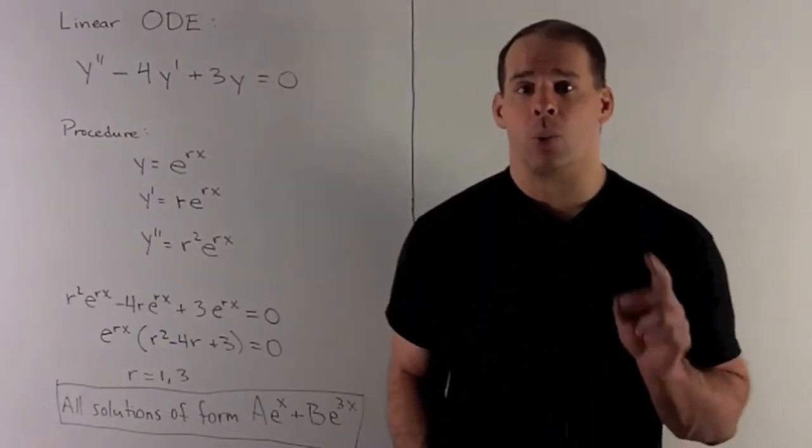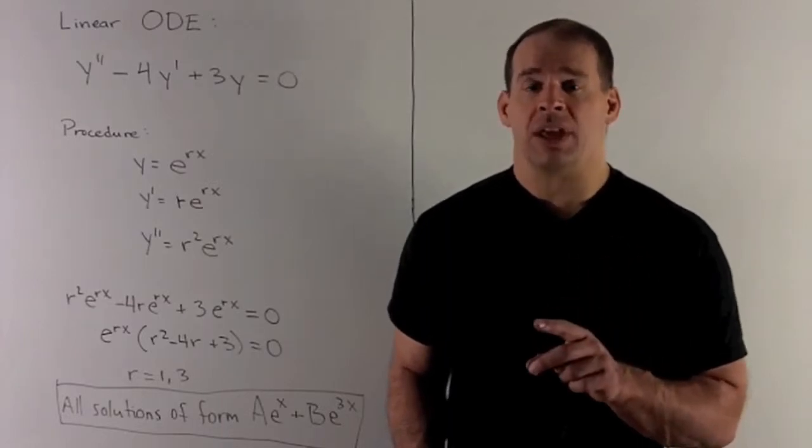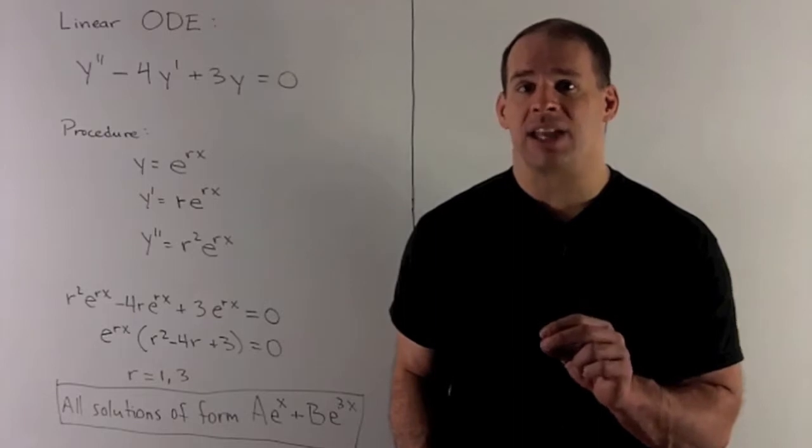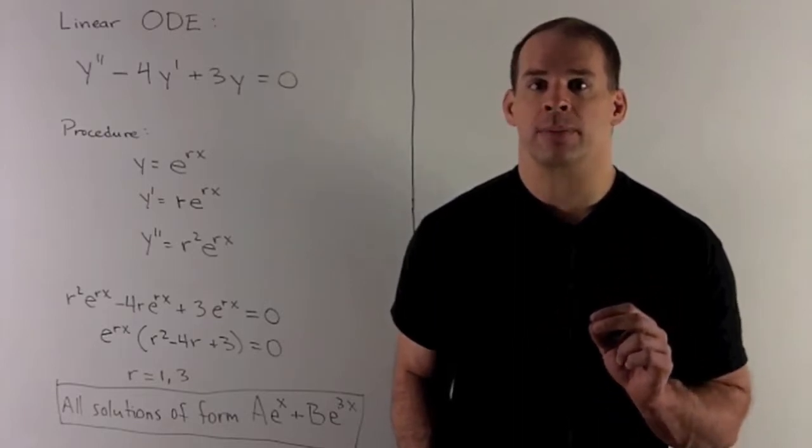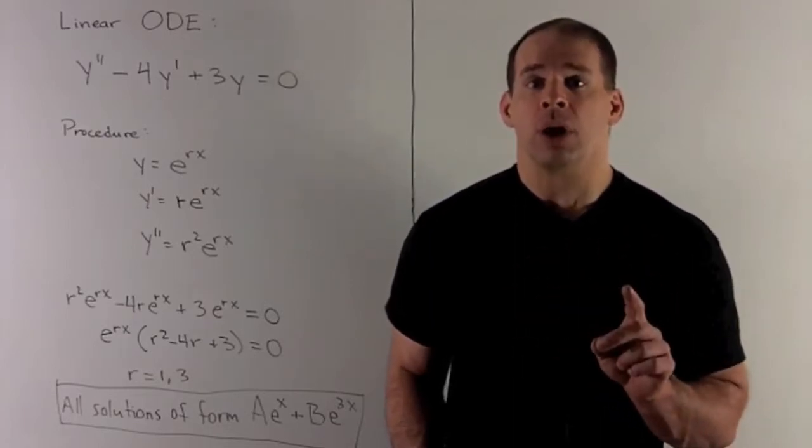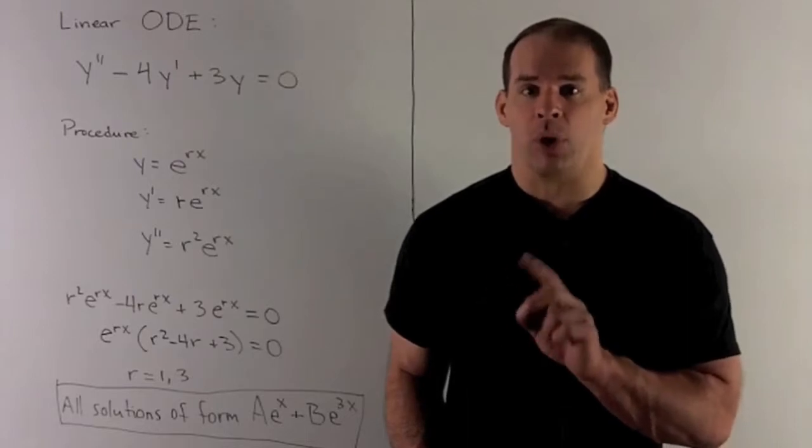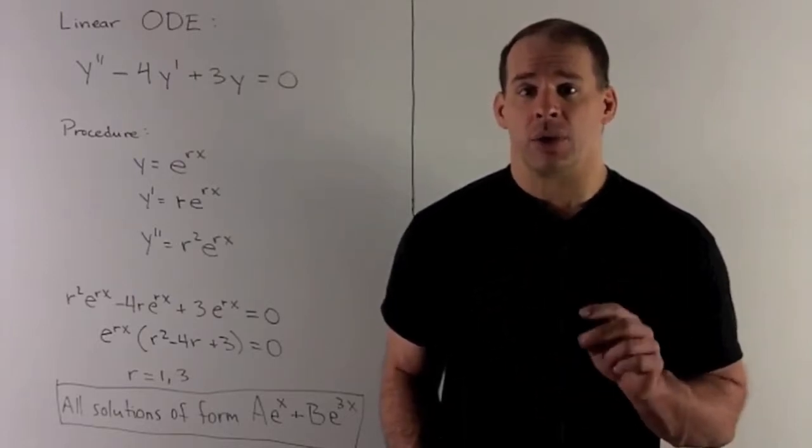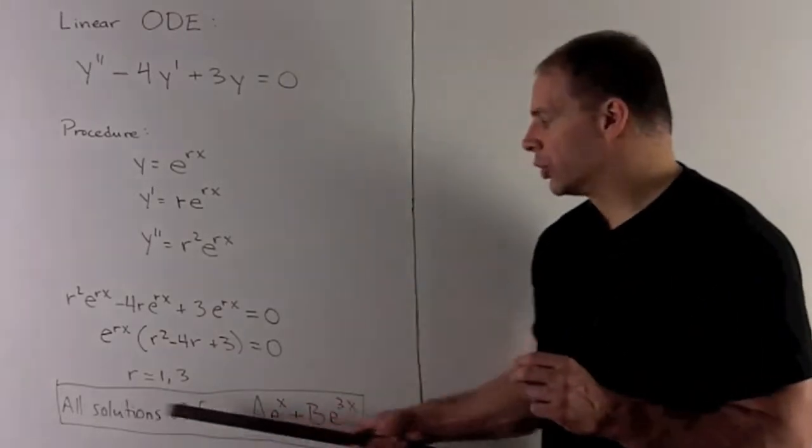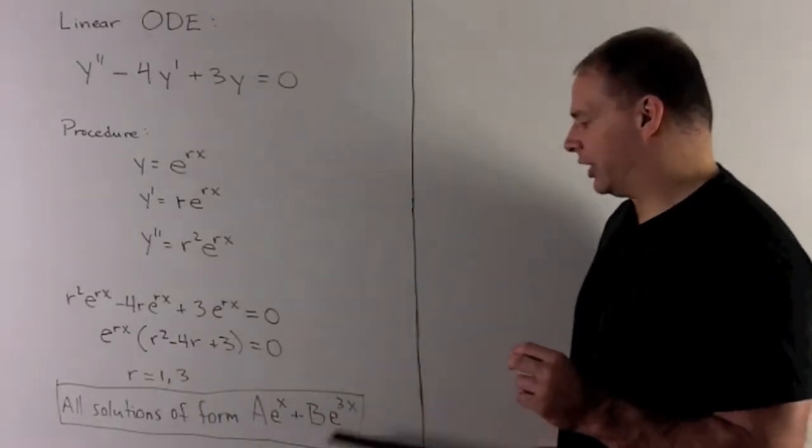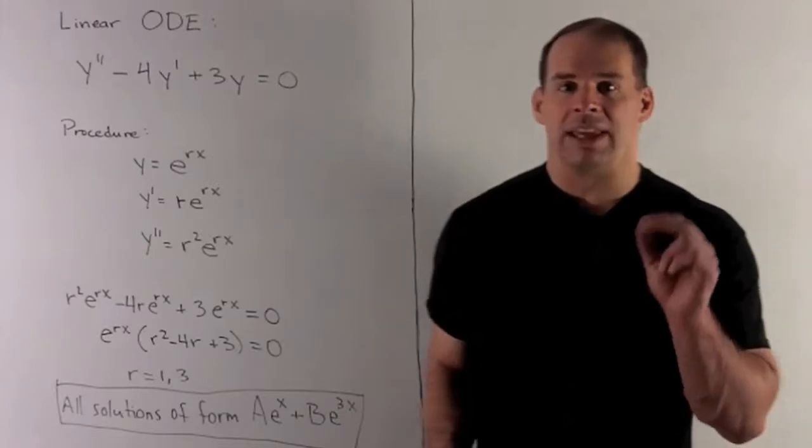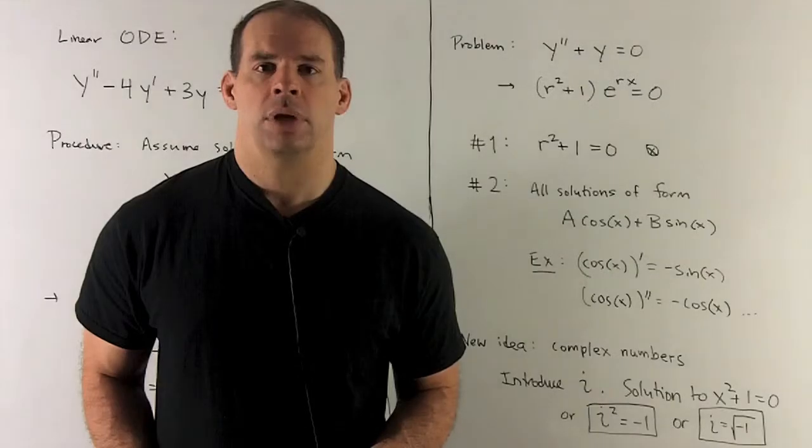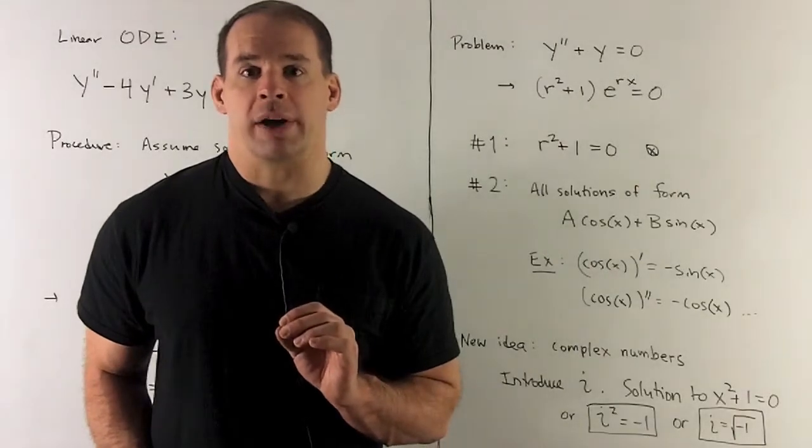So our roots are 1 and 3, which means if I'm hunting for solutions, I want to look at e to the x and e to the 3x. For those two, we'll still have solutions if I multiply by scalars and if I add them together. So the idea is going to be, all solutions are going to be covered by taking linear combinations of e to the x and e to the 3x. That's the situation where things work out nicely.